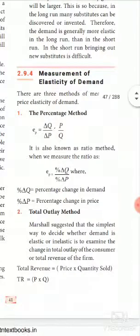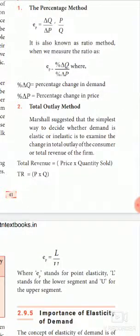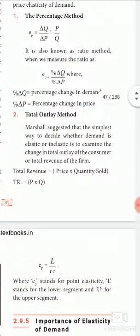Our next method is the total outlay method. Marshall suggested this method as the simplest way to decide whether demand is elastic or inelastic. We examine the change in the total outlay of the consumer or total revenue of the firm. Total revenue is equal to price multiplied by quantity sold, that is, TR equals P into Q.